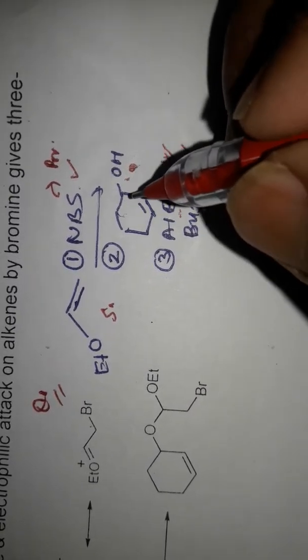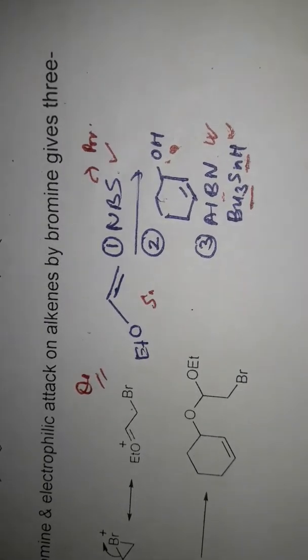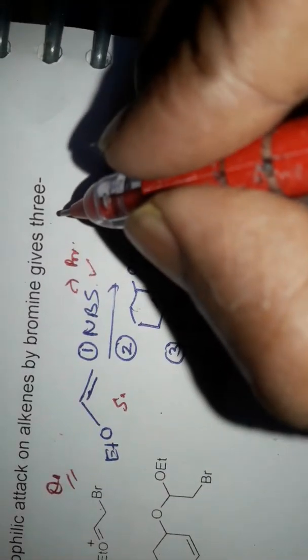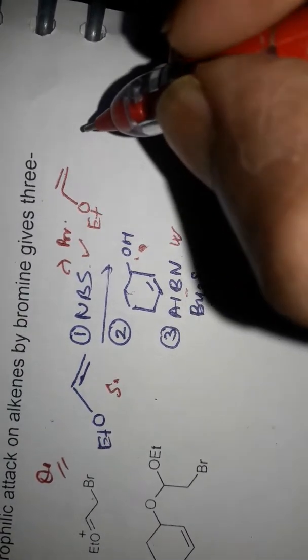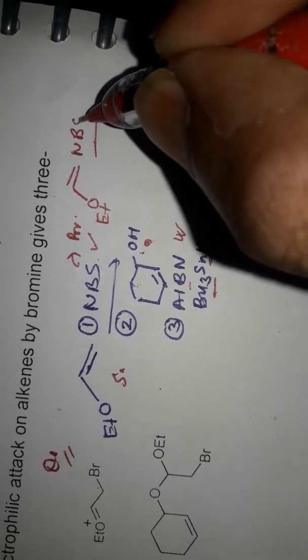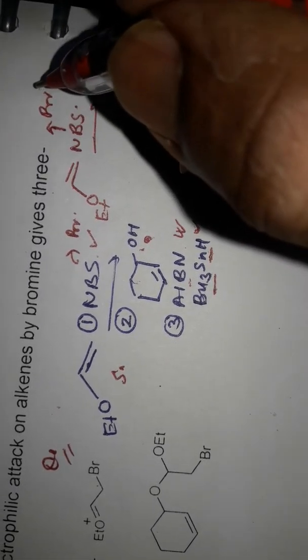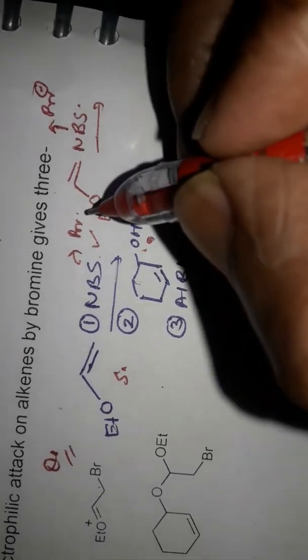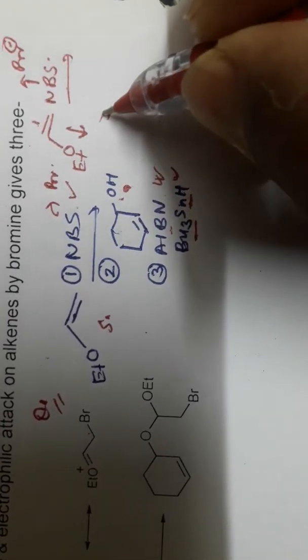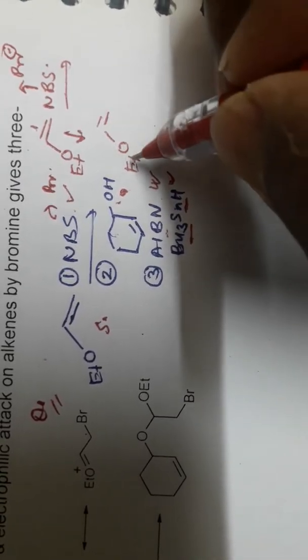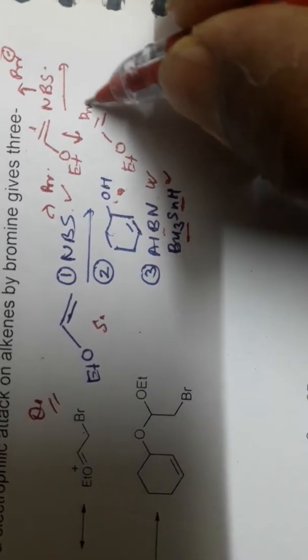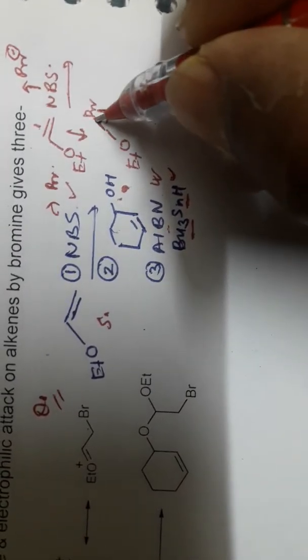One of the starting materials is shown here. When NBS is added to the starting material, it generates bromine. The bromine is added across the double bond — you can see this double bond here with the OEt group — so bromine is added here and the double bond disappears.